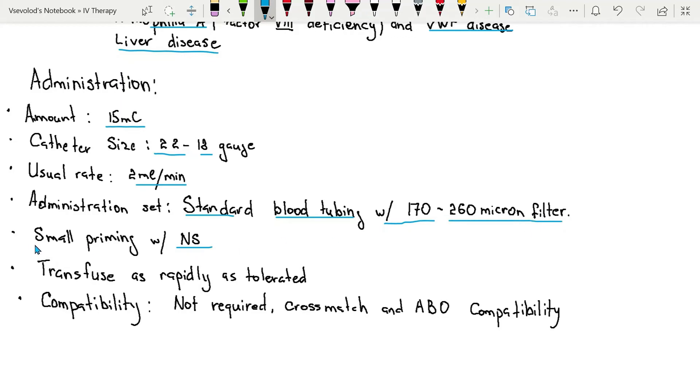Small priming volumes are recommended to decrease the loss of the product in the set. Cryoprecipitate should be transfused as rapidly as the patient can tolerate. Cross match and ABO compatibility is not required.